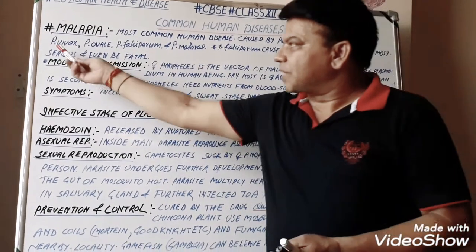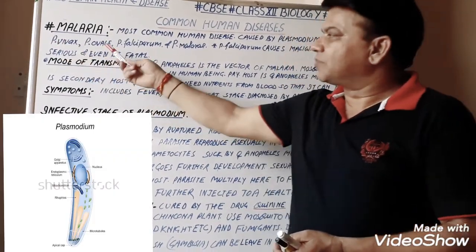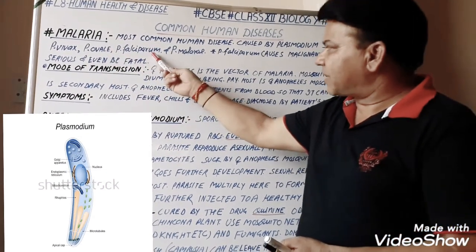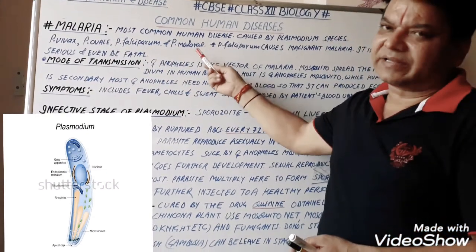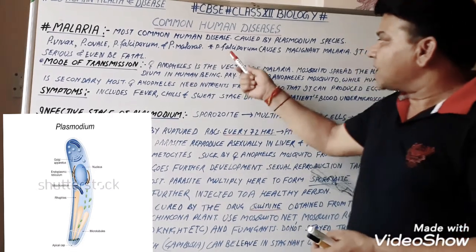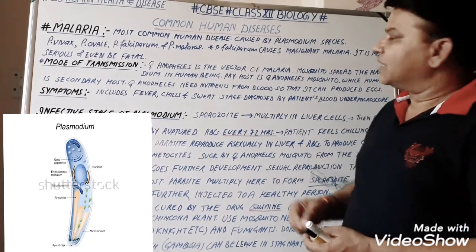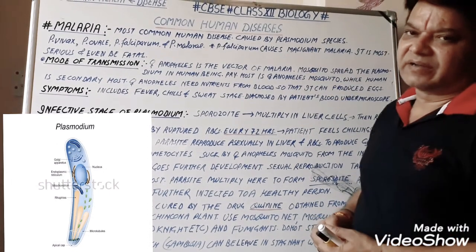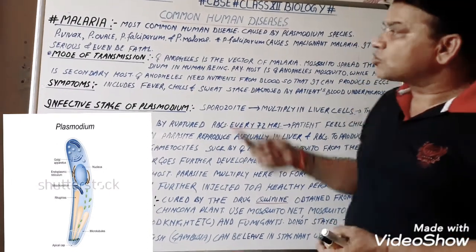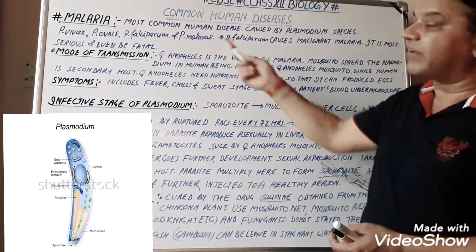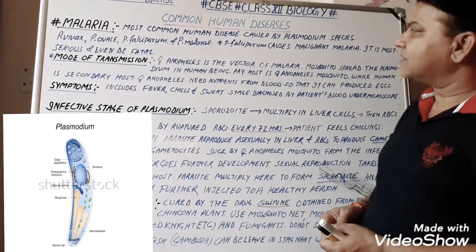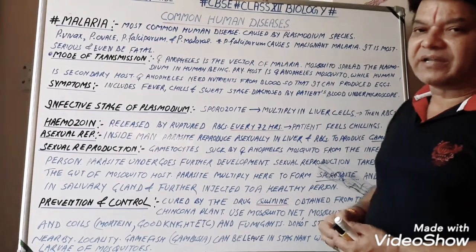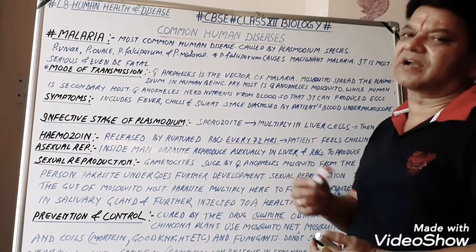There are four kinds of Plasmodium species: Plasmodium vivax, Plasmodium ovale, Plasmodium falciparum, and Plasmodium malariae. Plasmodium falciparum causes malignant malaria, which is the most serious and even fatal disease. Malignant malaria is the most serious type of malaria.